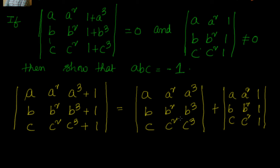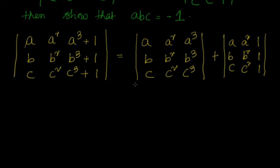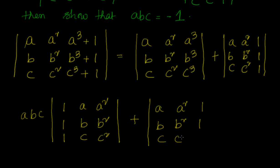Now this second part is what they said is not equal to zero. For the first matrix, can I convert it into a form matching the second? From row 1 take A common, row 2 take B common, row 3 take C common. That gives ABC times the determinant of (1, A, A²), (1, B, B²), (1, C, C²), plus the determinant of (A, A², 1), (B, B², 1), (C, C², 1).